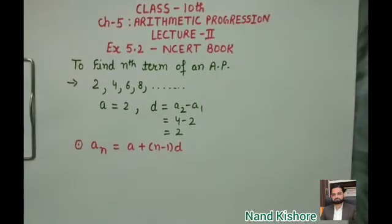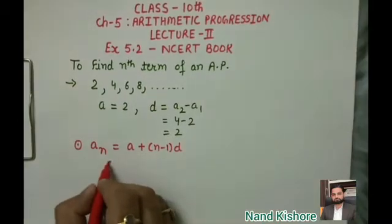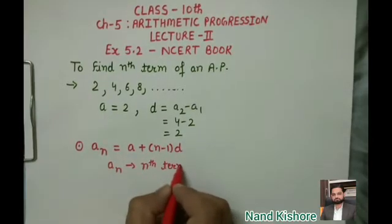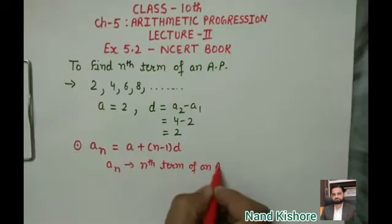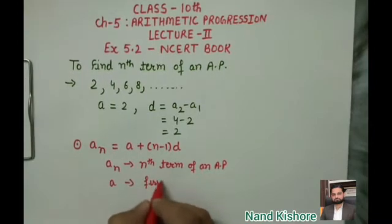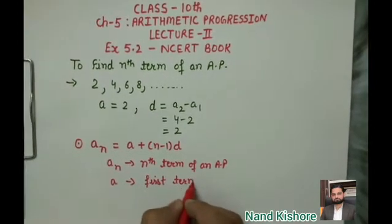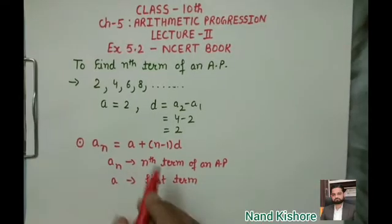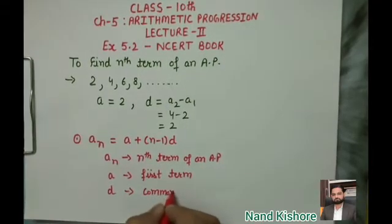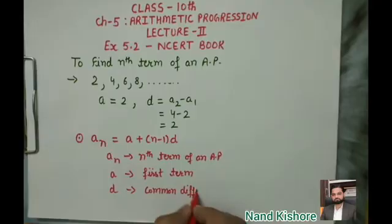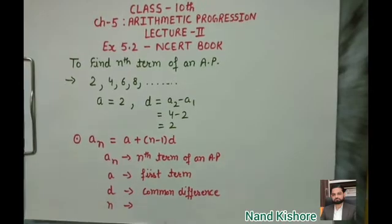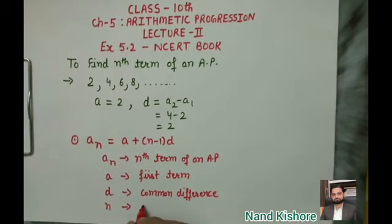In this formula, a_n is the nth term of the AP. 'a' is the first term, which we have already studied. 'd' is the common difference, and 'n' is the number of terms or the position of the term we want to find.